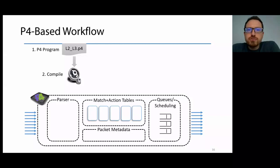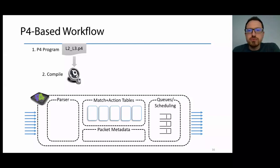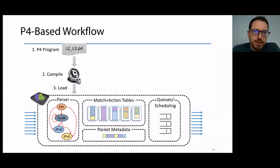The P4 program is then compiled, and the compiler tries to find a way to allocate hardware resources to run the required program. It can happen that compilation fails, because the compiler cannot find a way to fit the program in hardware, and sacrificing performance is not an option. In this case, it is up to the programmer to reorganize the program to fit in the available hardware resources. If the program is successfully compiled, there is the guarantee that packets will be processed at line rate.